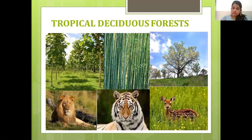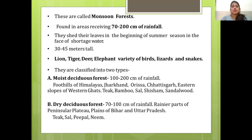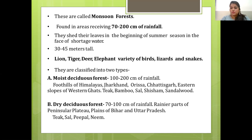Tropical deciduous forests, also called monsoon forests, are found in areas receiving 70 to 200 cm of rainfall. They shed their leaves at the beginning of summer and are about 30 to 45 meters tall. Animals like lion, tiger, deer, elephant and a variety of birds and lizards are seen here. Depending on the amount of rainfall, these forests are divided into moist deciduous and dry deciduous. Moist deciduous forests receive 100 to 200 cm of rainfall and are found at the foothills of the Himalayas, Jharkhand and Orissa. Common trees include teak, bamboo, sal and shisham.